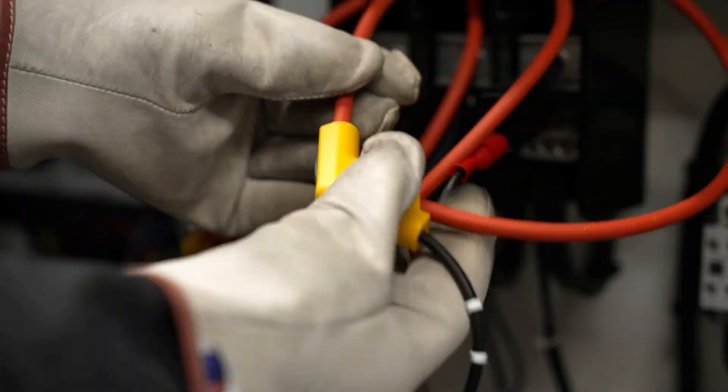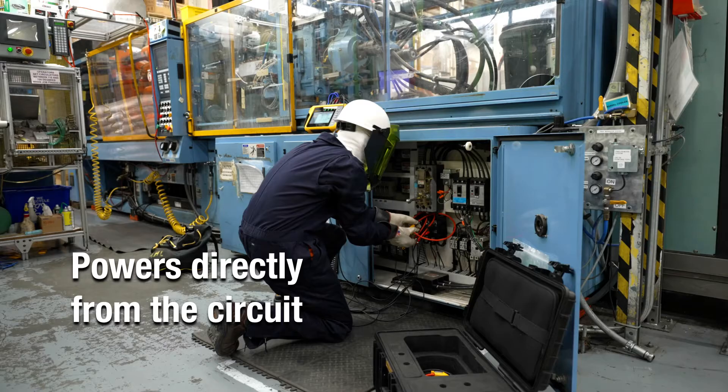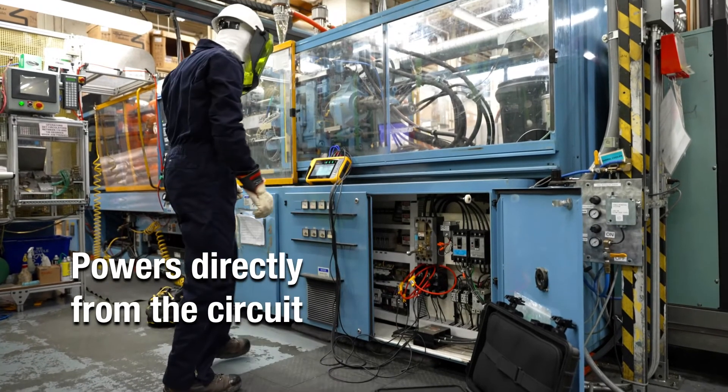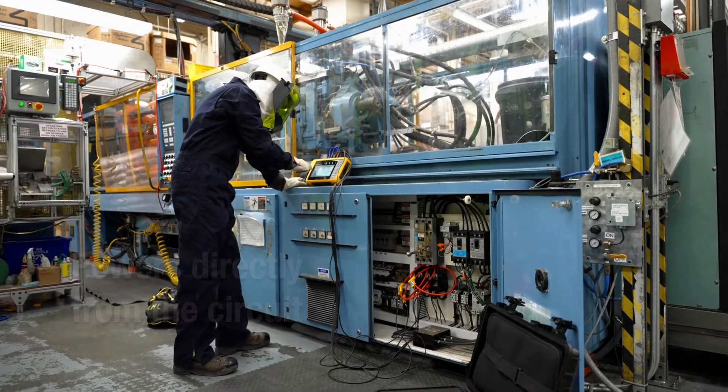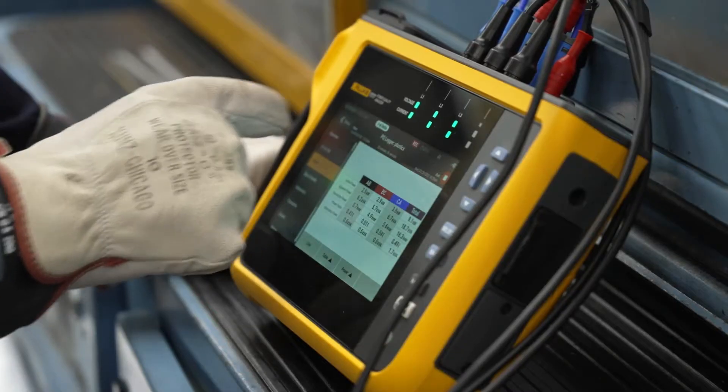The Fluke 1770 Series conveniently powers directly from the circuit you are measuring, so you won't need an electrical outlet or have to worry about failing batteries.